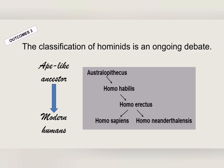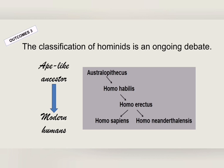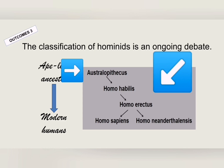Looking at this slide again, although humans evolved from an ape-like ancestor, in this shaded text box we can see all the intermediate species on the human evolution journey. Australopithecus is the oldest species furthest back, and as time progresses we end up with Homo sapiens and Homo neanderthalensis, which are the most recent species.